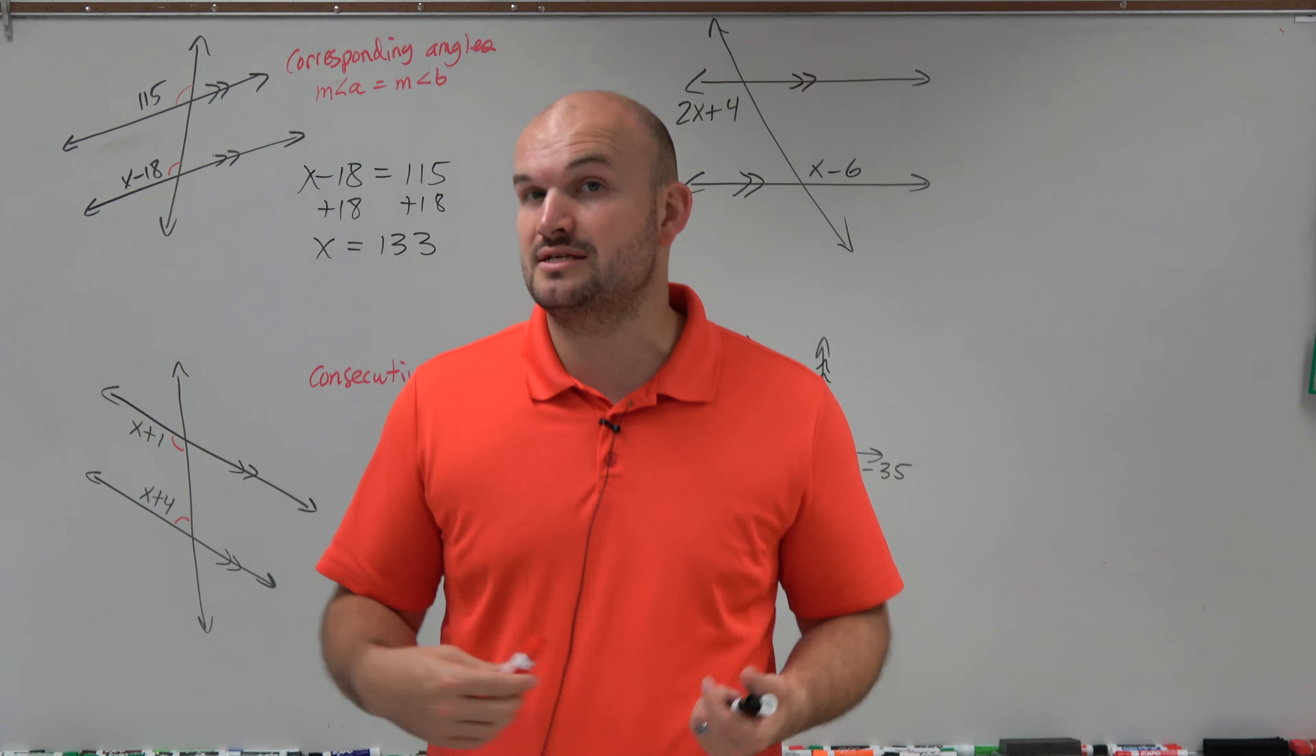So I'm going to write the equation, X plus 1 plus X plus 4 equals 180 degrees. Now, I didn't really need to put parentheses in there, but I just wanted to put parentheses so you can see how I differentiated between those two angles. Now, I can go and combine these. This is going to be 2X plus 5 equals 180 degrees.